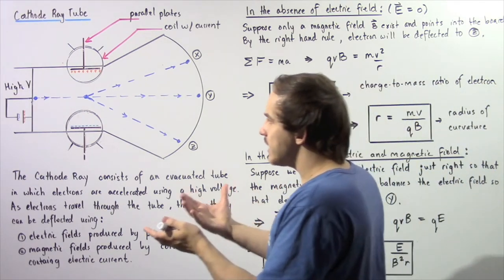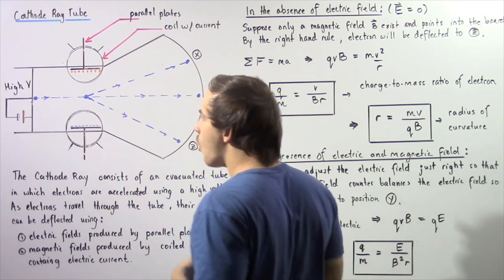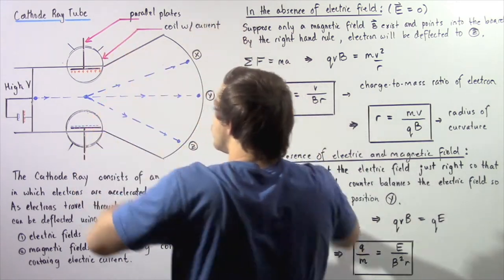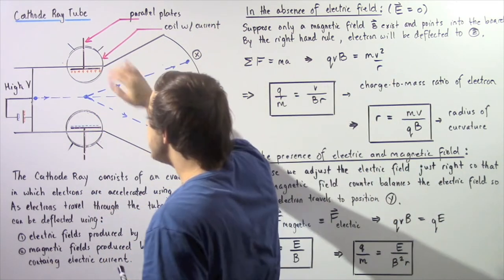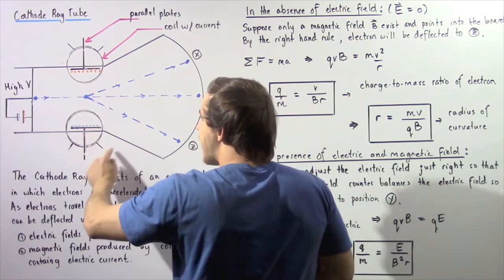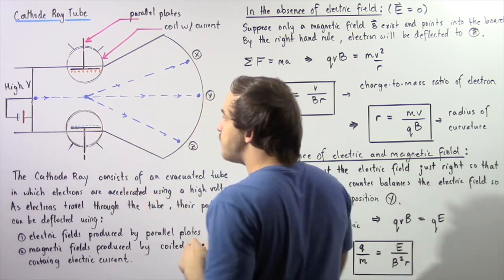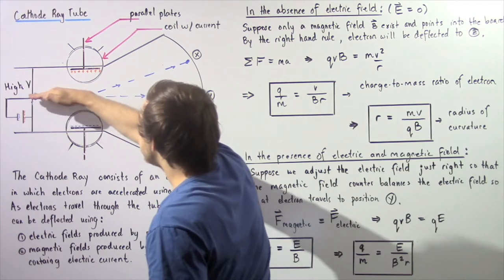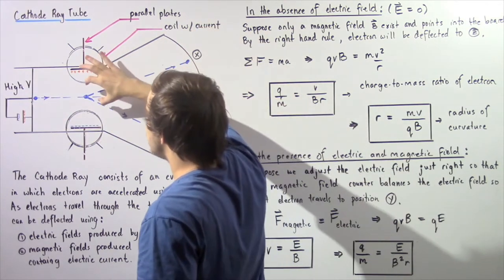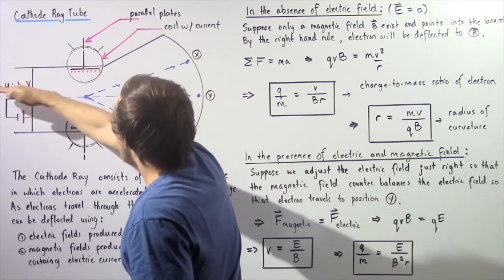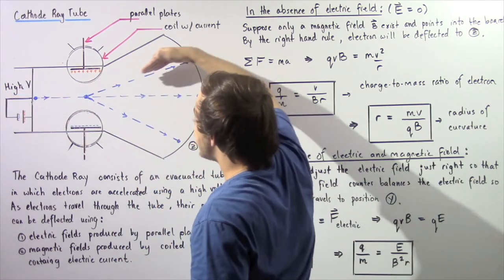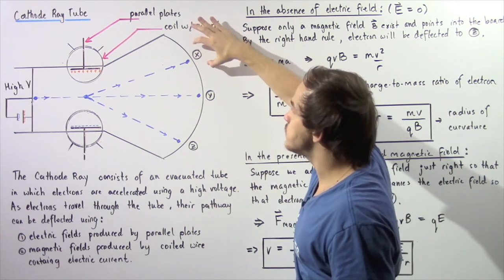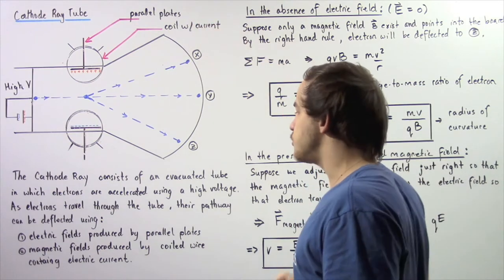Let's begin our study of the electron by removing our coils and supposing we only have an electric field produced by our two parallel plates. The electric field lines begin on the positive region and end on the negative region. When our electron reaches this position, it will be deflected towards the positive end, because we have a negative charge attracted to the positive side. So our electron will tend to gravitate to that side.